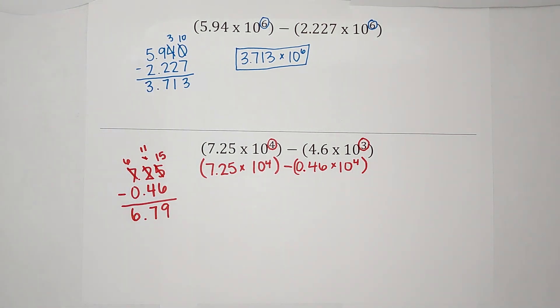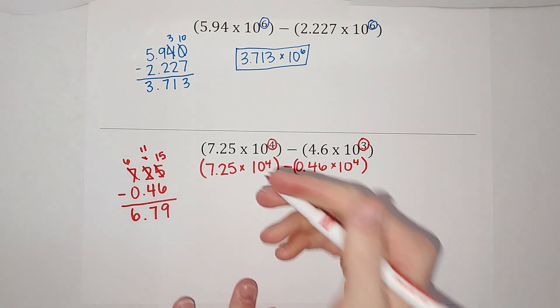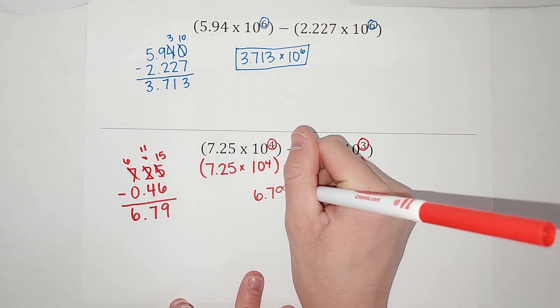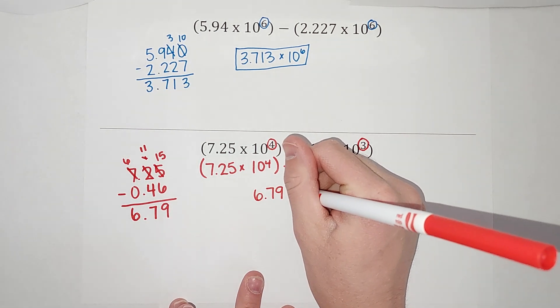Drop our decimal point down and six. So I end up with 6.79. And we are times 10 to the fourth.